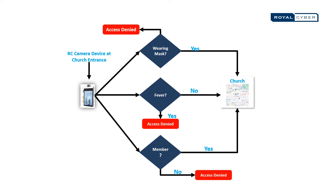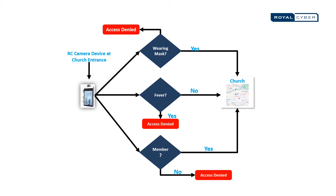Body temperature, to make sure the person visiting does not have a fever — if yes, access to the premises will be denied. Secondly, whether the person is wearing a mask or not — if not, access to the premises will again be denied.